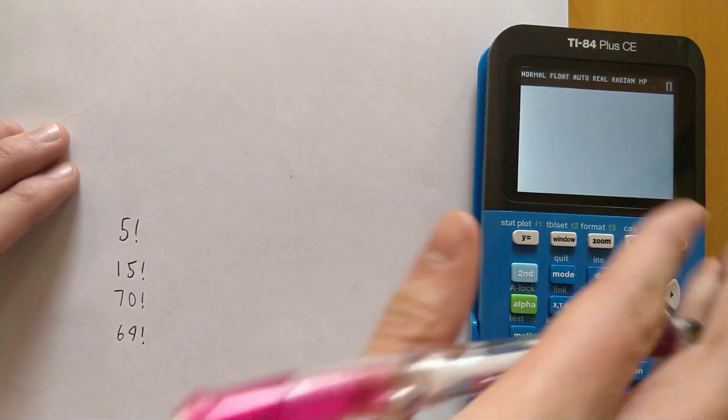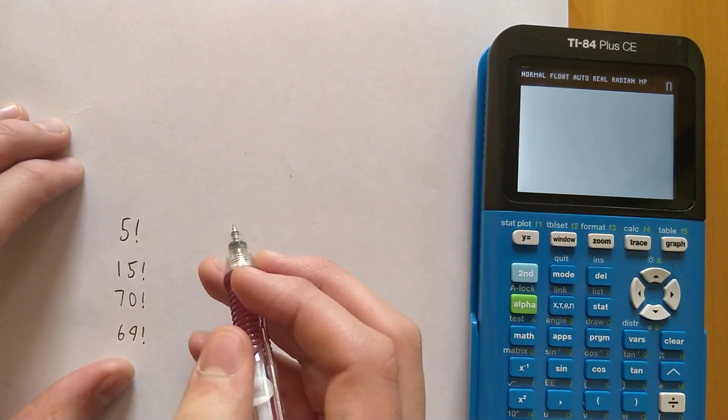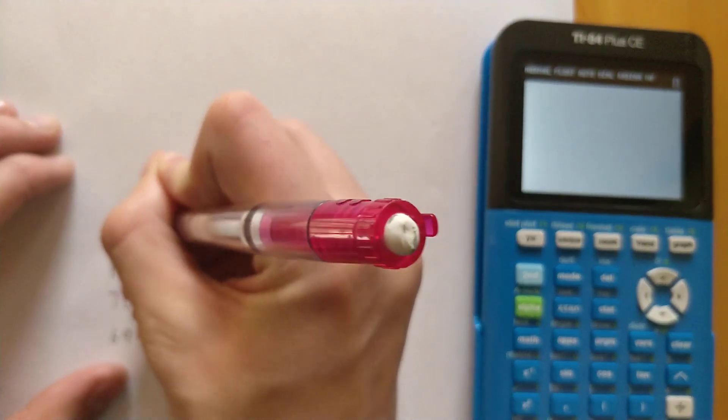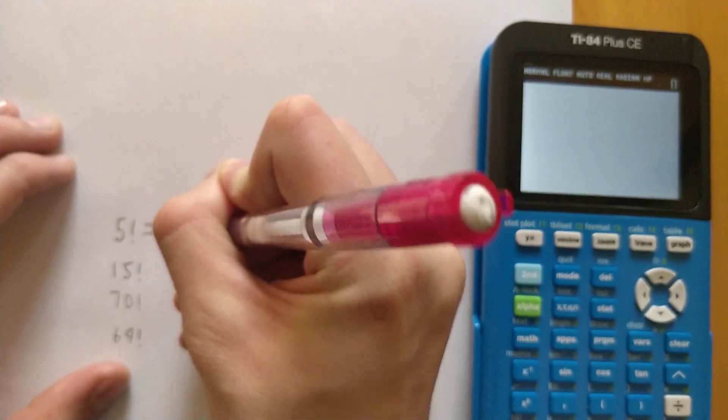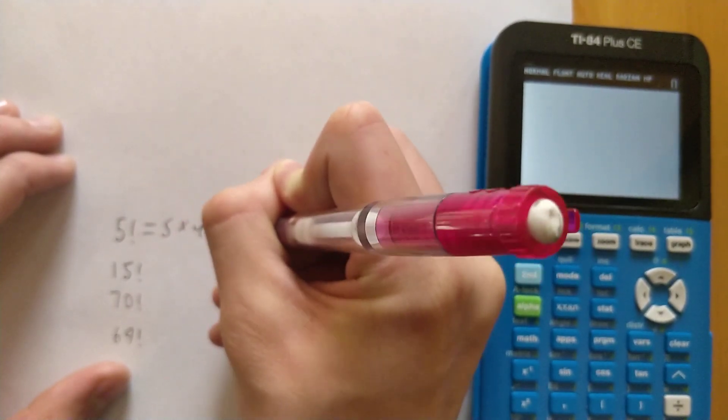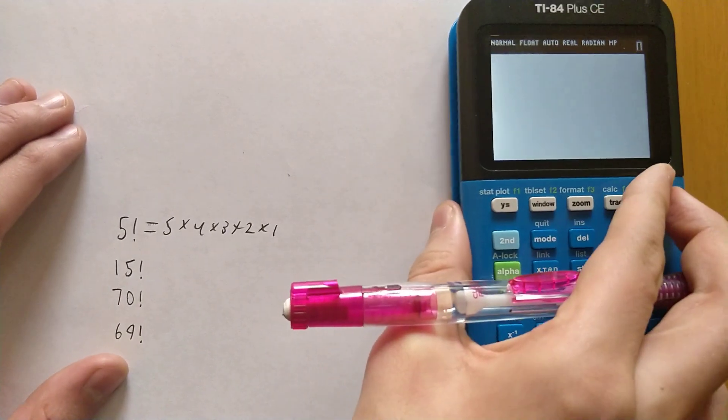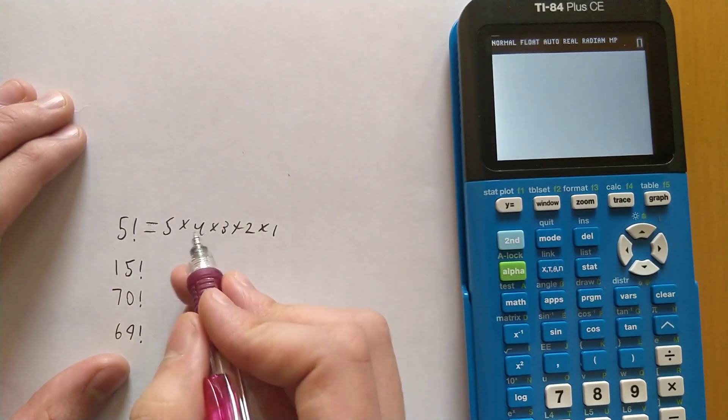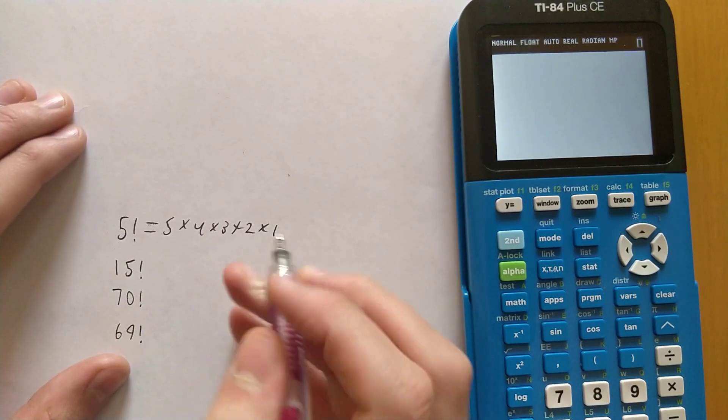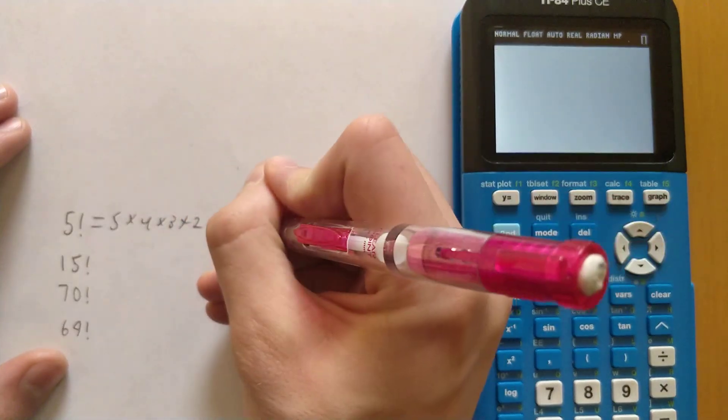Factorials are basically when you just multiply all the numbers that come before that number together. So for 5, it would just be 5 times 4 times 3 times 2 times 1. Since it's a smaller number, it's pretty easy to calculate. So 5 times 4 is 20, times 3 would be 60, times 2 would be 120, and then times 1 would still be 120.